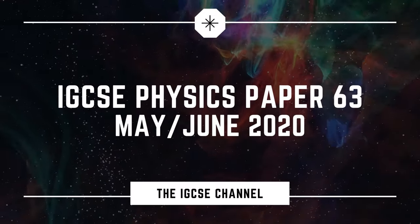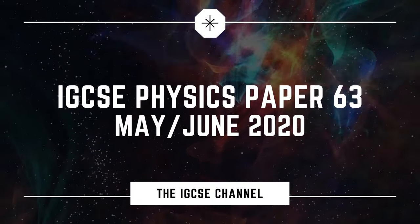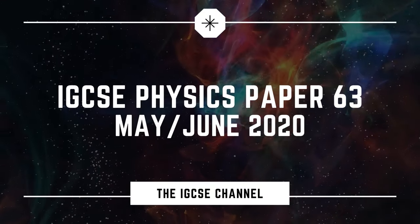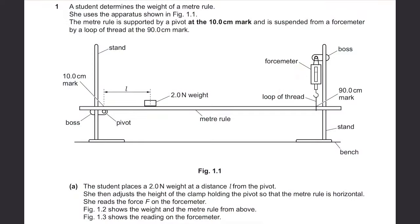This is Cambridge IGCSE Physics, Paper 63, 2020. Question 1. A student determines the weight of a meter rule. She uses the apparatus shown in figure 1.1. The meter rule is supported by a pivot at the 10cm mark and is suspended from a force meter by a loop of thread at the 90cm mark.